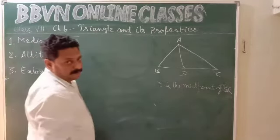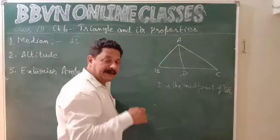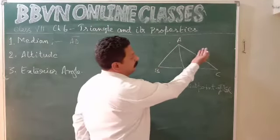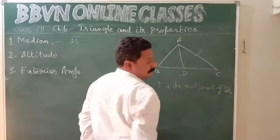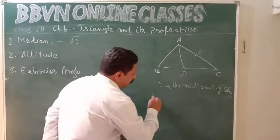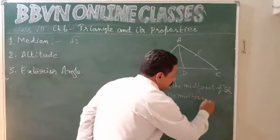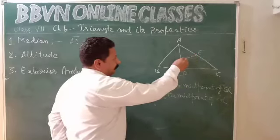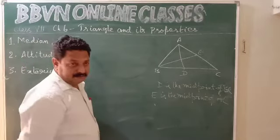So AD is one of the medians. Since a triangle has three vertices, it can have three medians. For vertex B, the side opposite to vertex B is AC. Let us consider E as the midpoint of AC, which means length AE equals length EC. Now I join E with B, and I get the second median BE.